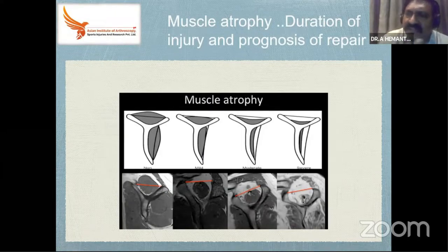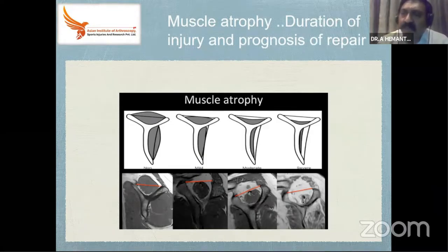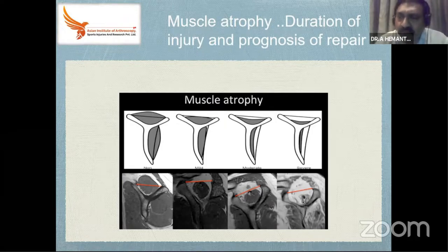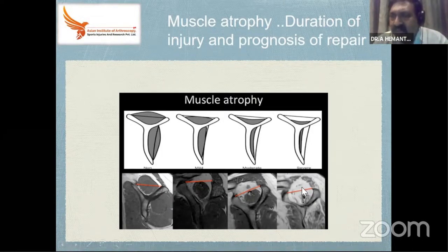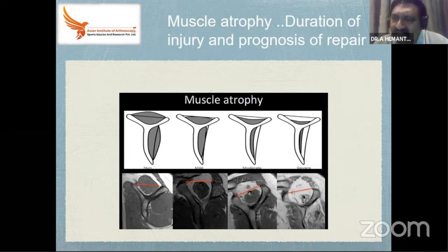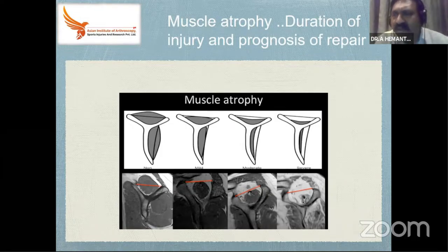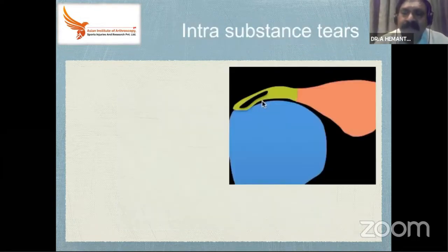The muscle belly must be assessed because this is prognostically important — not just repairing a cuff tear, but what is the prognosis. If the muscle belly has too much fatty infiltration, the chances of recovery are lesser. You may repair a cuff but it may not be functional. It's like the engine of a car — if the engine is not good, there is no point in fixing the tyre.